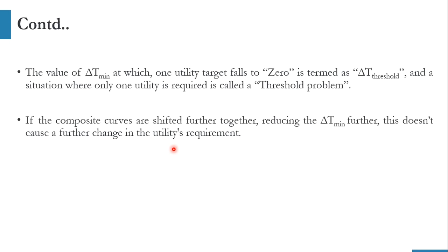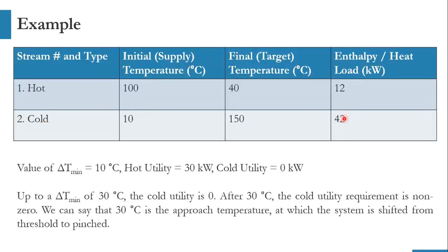Consider this example: a hot stream entering at 100 degrees centigrade, leaving at 40 degrees centigrade, with a heat load of 12 kilowatts, and a cold stream entering at 10 degrees centigrade, leaving at 150 degrees centigrade, with a heat load of 42 kilowatts. For a delta T minimum of 10, hot utility is 30 kilowatts and cold utility is zero kilowatts. Once the temperature is taken to 30 degrees centigrade, cold utility requirement remains zero — meaning the system is at threshold up to 30 degrees centigrade. But once you cross 30 degrees centigrade, cold utility becomes non-zero. Therefore, the delta T threshold is 30 degrees centigrade, at which the system turns to the threshold.